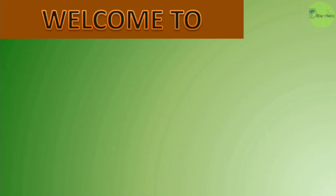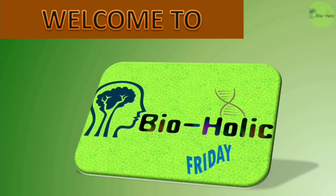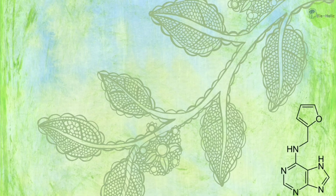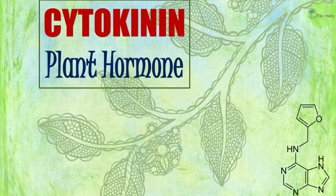Hello viewers, welcome to another Friday class on Bioholic with me, your educator Olivia. We are now learning the chapter on plant hormones, and this is the fourth class. We have already studied auxin and gibberellins. Watch this video till the end because after the class you have to appear in the self-assessment test and get a good score.